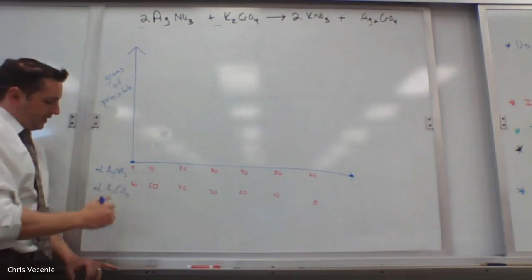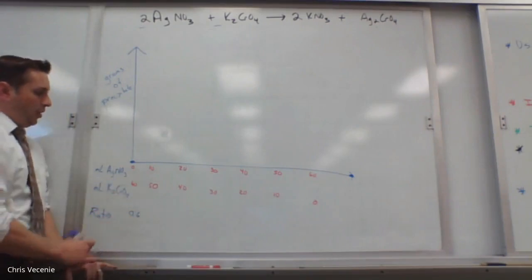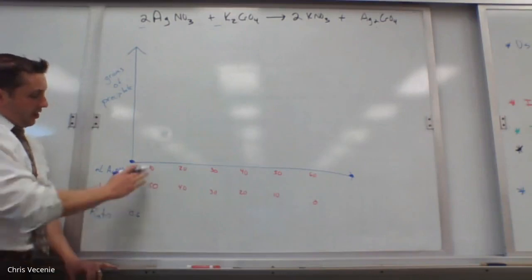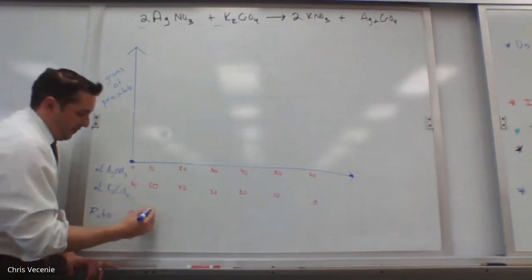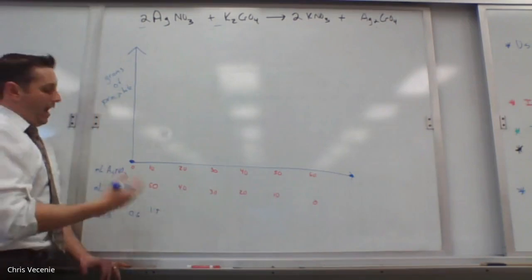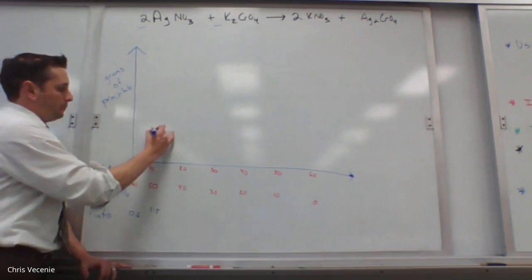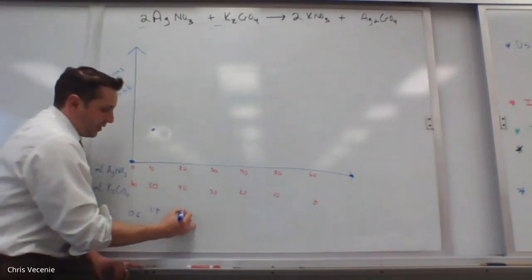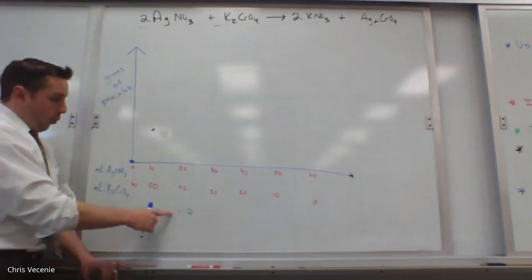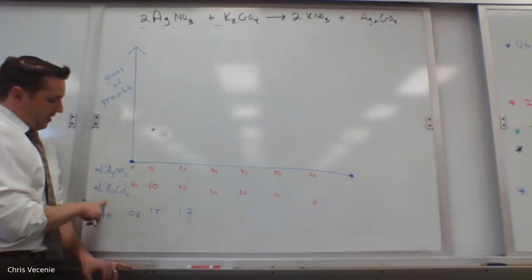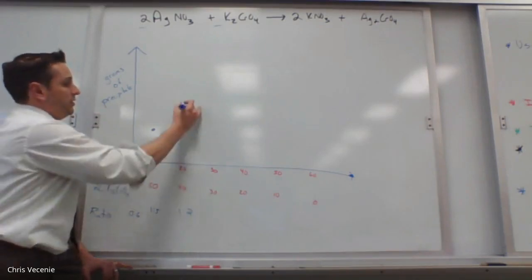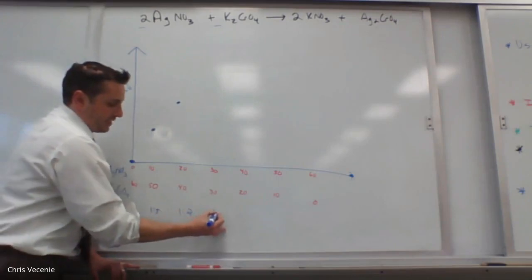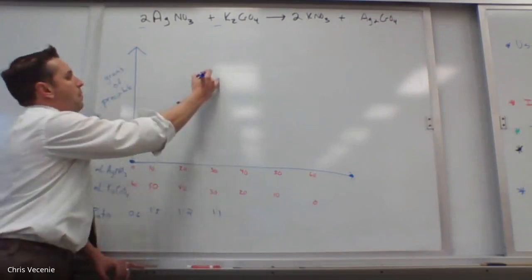For the first trial: 0 mL of AgNO₃ and 60 mL of K₂CrO₄ — a 0 to 6 ratio. We get no product because we didn't initiate a reaction, so that's a baseline point. Next, 10 mL of AgNO₃ to 50 mL — testing a 1 to 5 ratio — we start to get some precipitate. Then 20 to 40, which is a 1 to 2 ratio, increased more. Then 30 mL of each — testing the 1 to 1 ratio — increased more again.